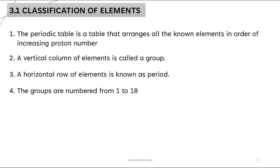The periodic table is a table that arranges all the elements in order of increasing proton number. The vertical column of elements is called a group, while the horizontal row of elements is known as a period, and the groups are numbered from 1 to 18.